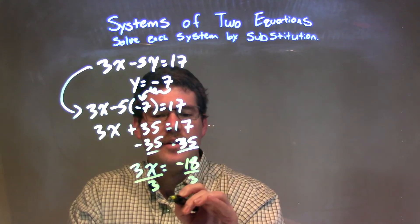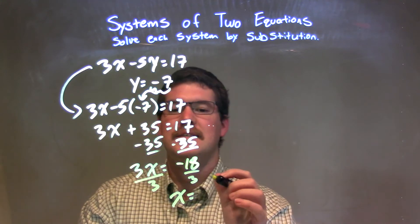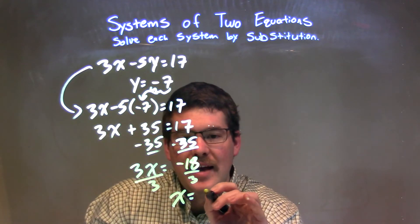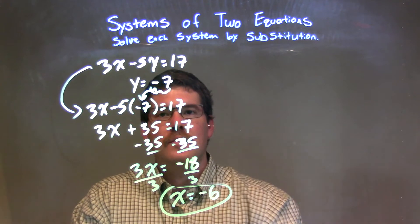Divided by 3 to both sides gives me x by itself. Negative 18 divided by 3 is negative 6. So we have an x value of negative 6.